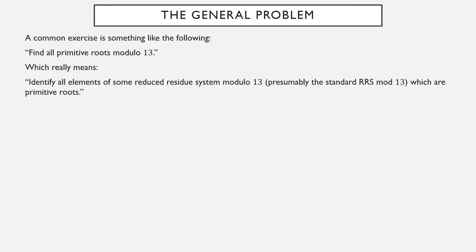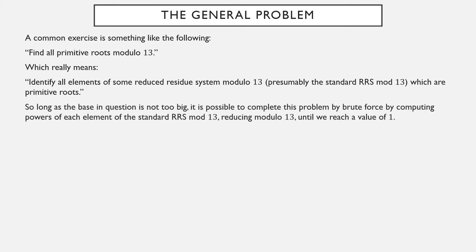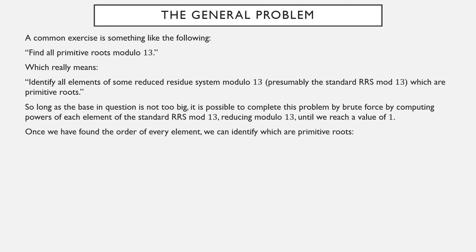What you can interpret that as: identify all elements of a reduced residue system mod 13 — possibly the standard reduced residue system mod 13 — which are primitive roots. As long as the base isn't unreasonably large, it's possible to do this with brute force by manually computing powers of every element of the standard reduced residue system mod 13, reducing mod 13 until we find a value of 1. That will help us find the order of every element. Once we've found the order of every element, we simply identify which of them are primitive roots.